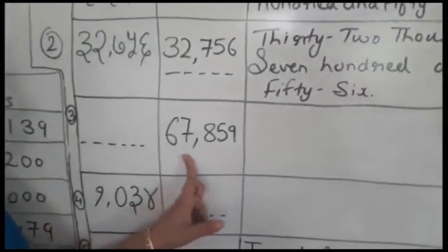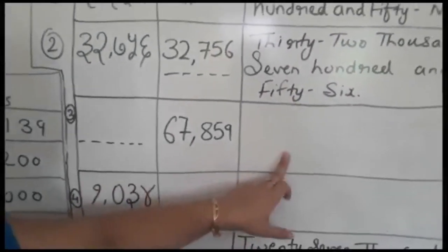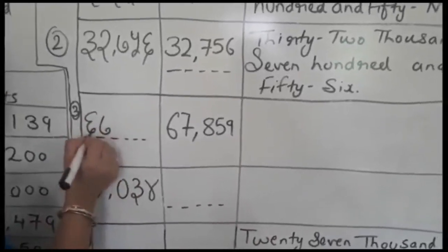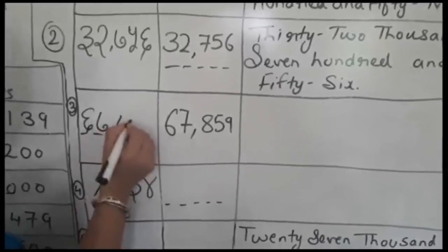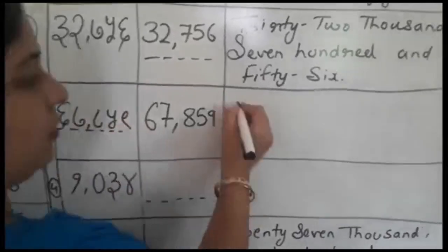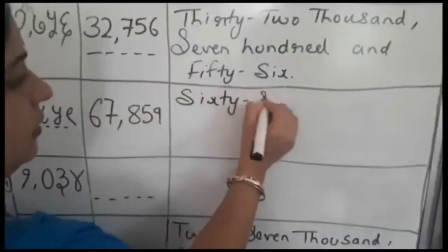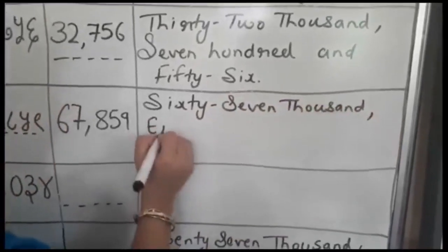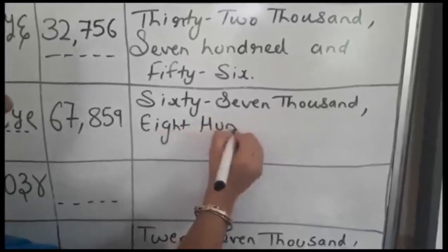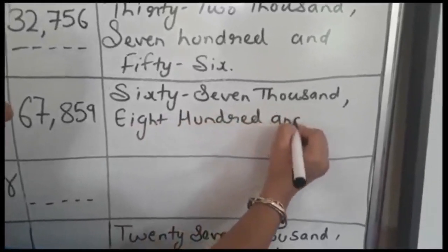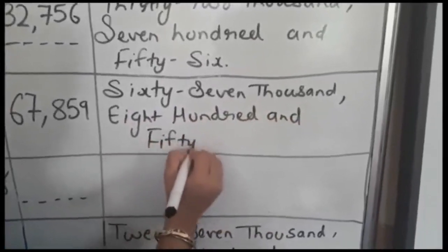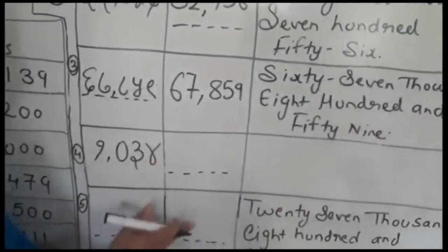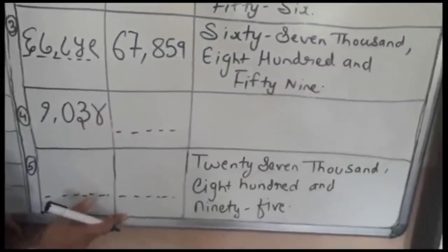Third, they have given international numerals and we have to write Devnavi numerals and in words: 67,859. Here in words: sixty-seven thousand, eight hundred and fifty-nine. This you can do by yourself as homework.